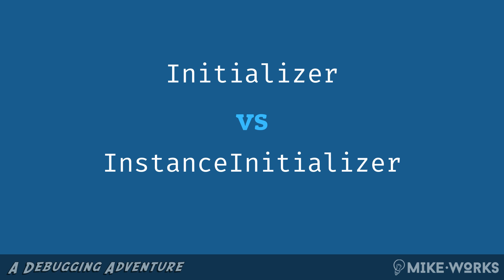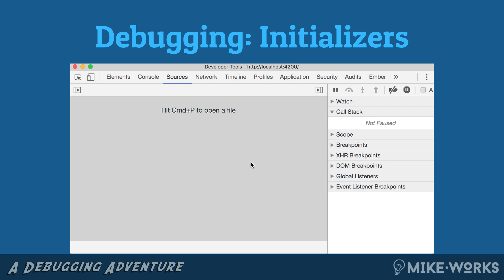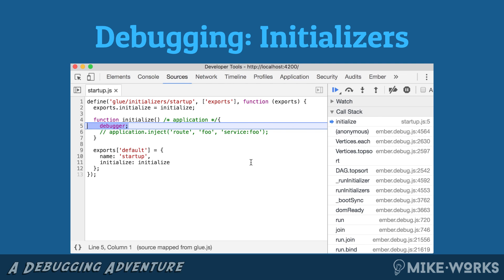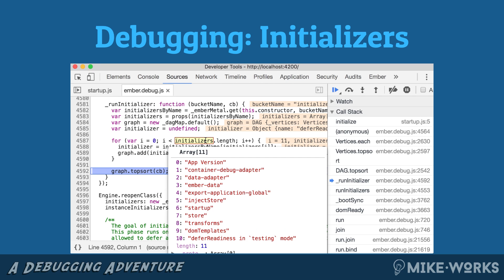In terms of practical things you can do with this newfound knowledge: the first thing is knowing how to see which initializers are available. This is very important if you are trying to position your initializer in your app or add-on in the right place. The way we do this is to create a new initializer just for investigation and put a debugger inside the initialize function. Once frozen at that frame in the code, you can go a couple of stack frames up and find a for loop that iterates over the entire array of initializers, showing you all your options for where to position yourself before or after.